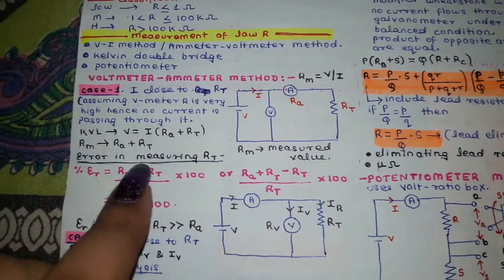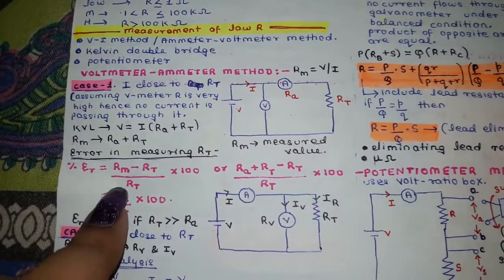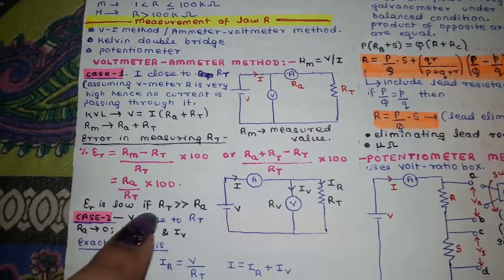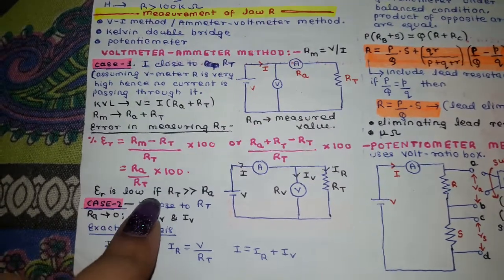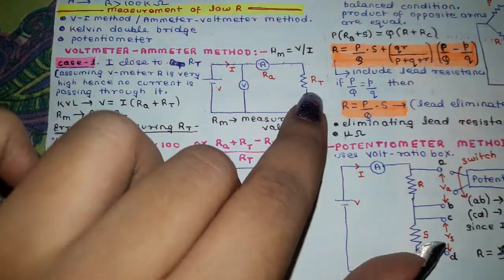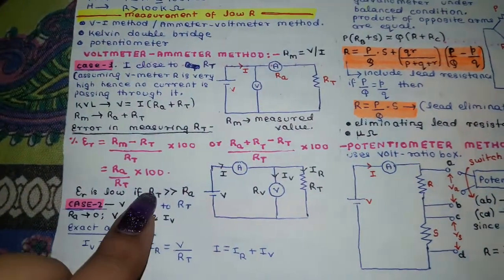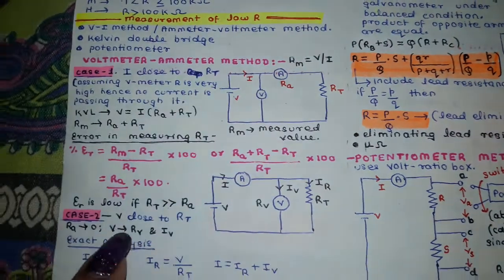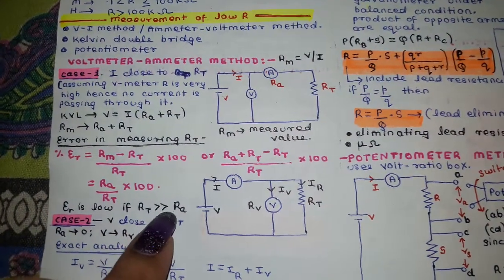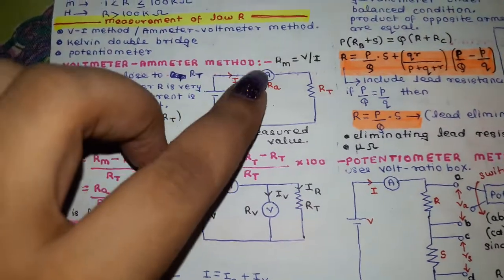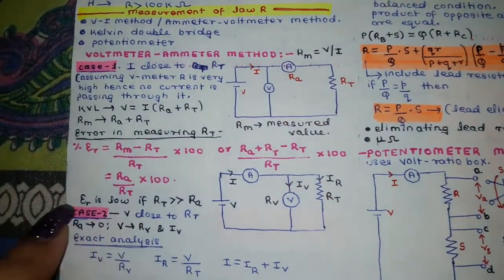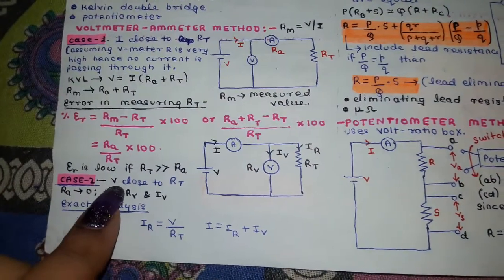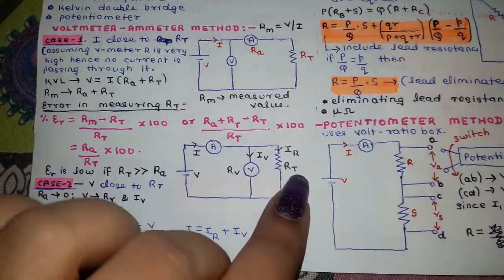The measured value Rm has an associated error given by specific formulas based on the given data. The error is low when the unknown resistance is very high compared to the internal resistance of the ammeter — meaning the unknown resistance is much larger than the ammeter's internal resistance.